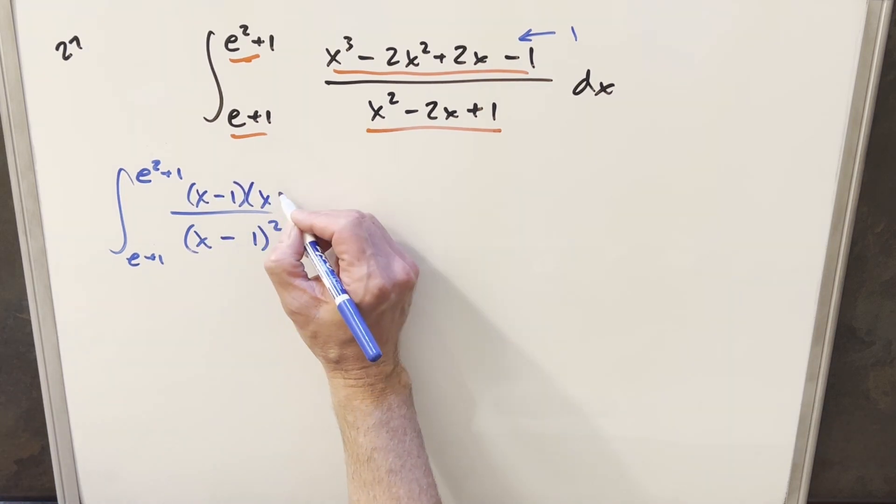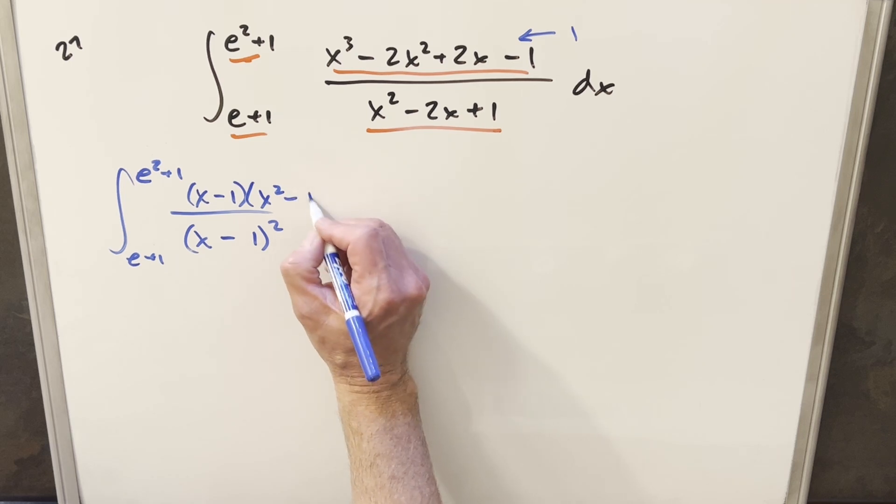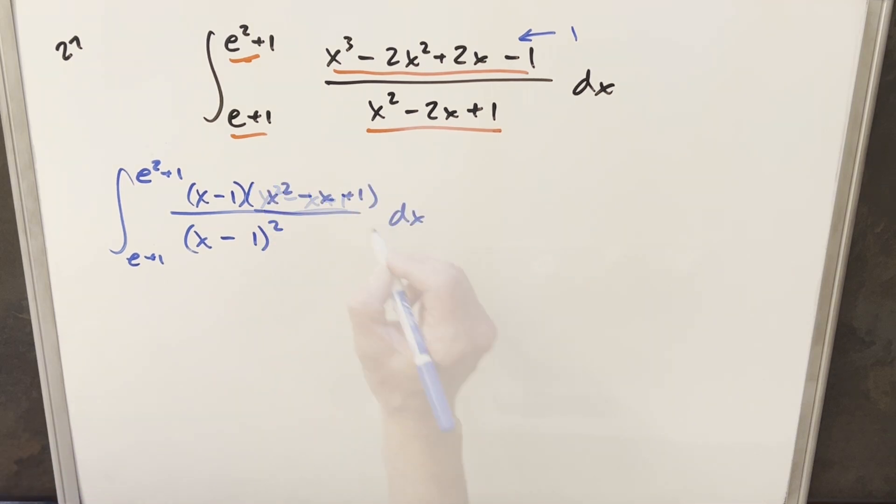And then kind of just putting this together in reverse, we see that the rest of this is going to be x squared minus x plus 1. But then what that does is now we have x minus 1 in common in the numerator and denominator. So I'll cancel this with one of these.